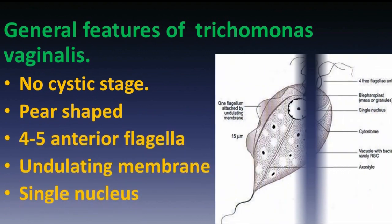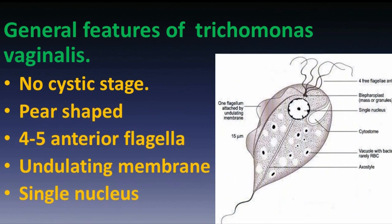General features of Trichomonas vaginalis: there is no cystic stage. It is pear-shaped, approximately 4-25 micrometers, with 4 anterior flagella and an undulating membrane and a single nucleus.